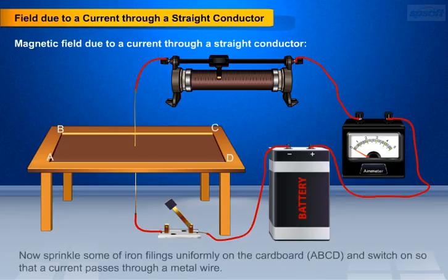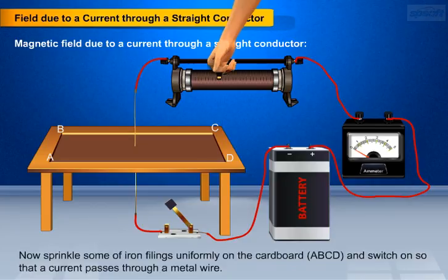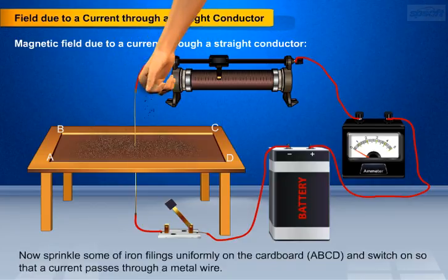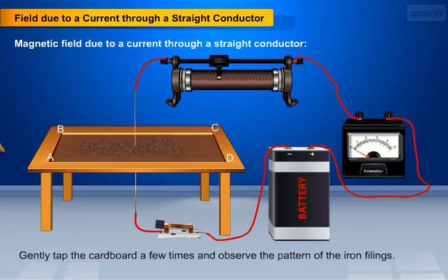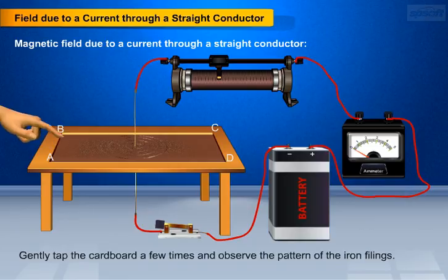Now sprinkle some iron filings uniformly on the cardboard ABCD and switch on so that a current passes through the metal wire. Gently tap the cardboard a few times and observe the pattern of the iron filings.